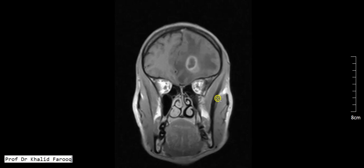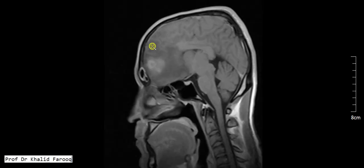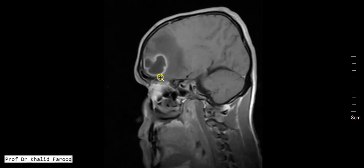On sagittal images, we can see edema and the collection with peripheral post-contrast enhancement. The defect in the posterior bony boundary of the frontal sinus and mild adjacent anterior meningeal enhancement are visible. This is an abscess in the frontal lobe. Thank you very much, assalamu alaikum warahmatullah.